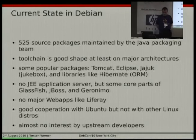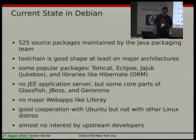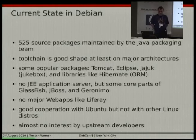We have no Java Enterprise application server, but some core libraries from Glassfish, JBoss, and Geronimo. We have no major web application — something like LifeRay is not packaged; it's quite horrible to get all those libraries and plugins built. We have good cooperation with Ubuntu but not with other Linux distributions. We have almost no interest from upstream developers. From all those more than 500 packages, almost nobody from the upstream maintainers is really interested in Debian. Across all 500 packages, if you have contact with 10 upstreams, that's quite a lot.